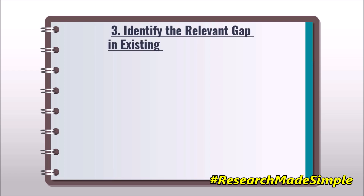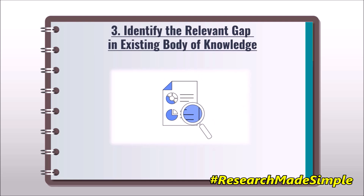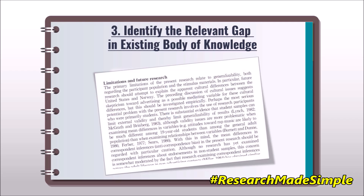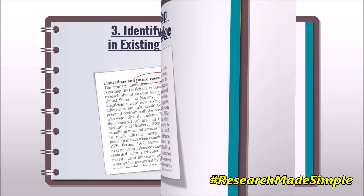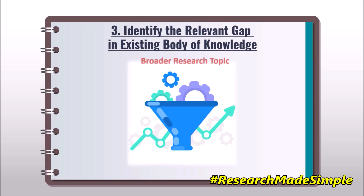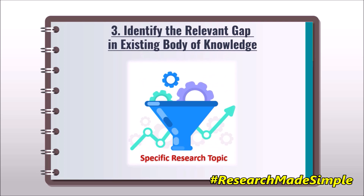The third step is to identify the relevant gap in the existing body of knowledge. There exist some gap-spotting techniques, but initially we can refer to the future research part in relevant research papers published in our research domain. This future research part is generally mentioned at the end of such papers, just before the references, and it will help you in narrowing down your broader topic into a specific research topic.